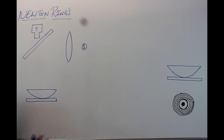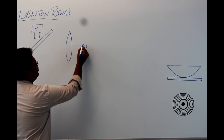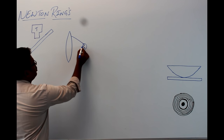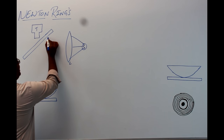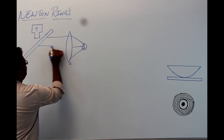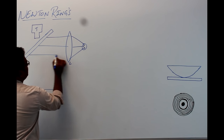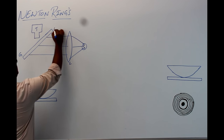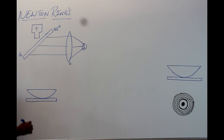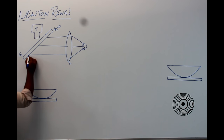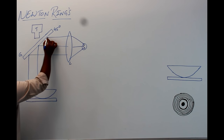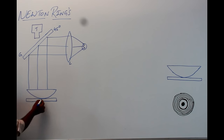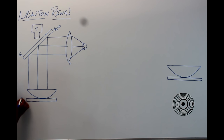Consider a monochromatic source of light and allow it to fall on a convex lens L. From the convex lens, the light rays become parallel and fall on a glass plate G inclined at 45 degrees. From the glass plate G, the light rays bend 90 degrees and fall normally on a plano-convex lens kept on a glass plate P.